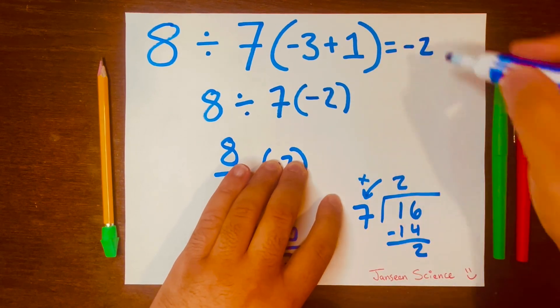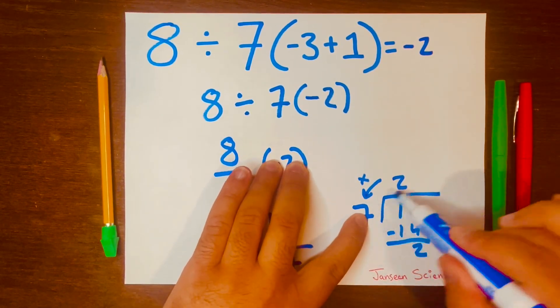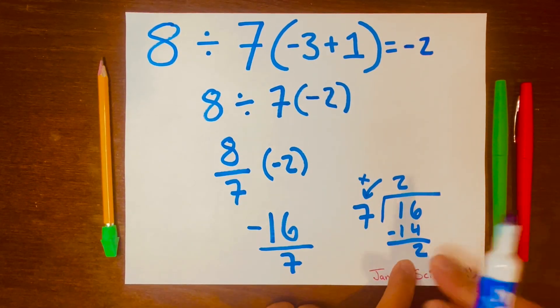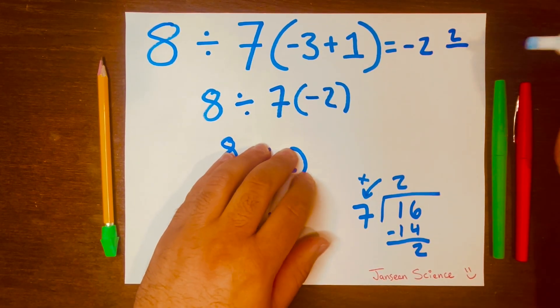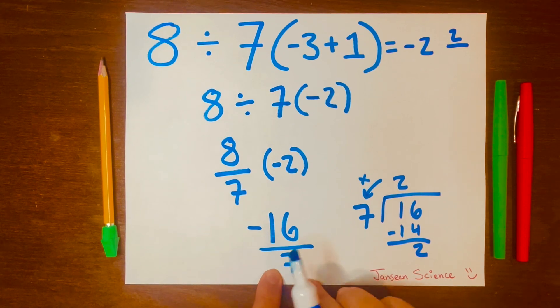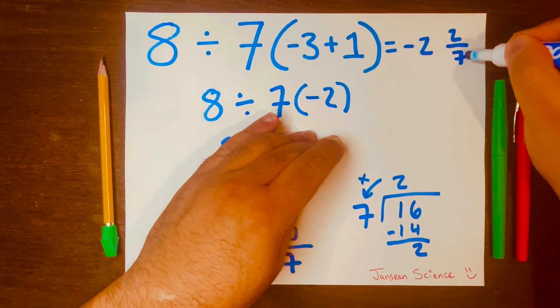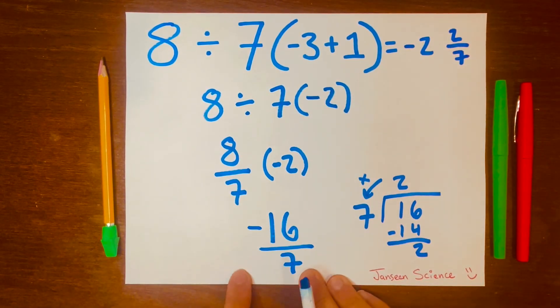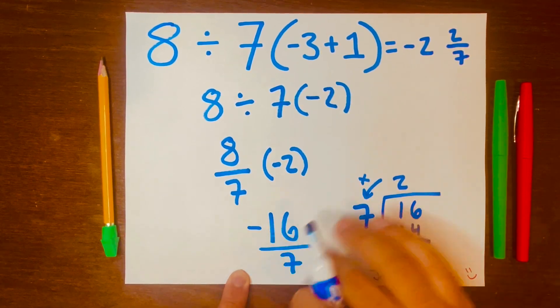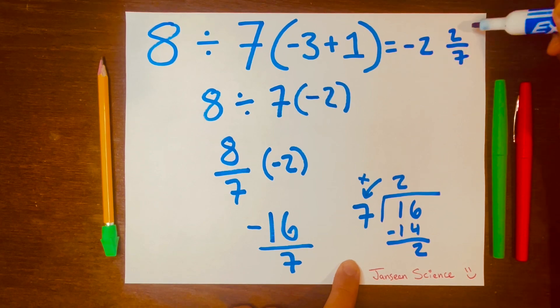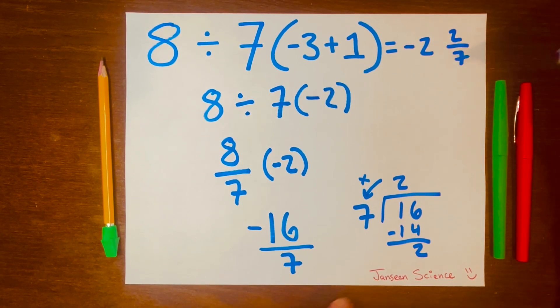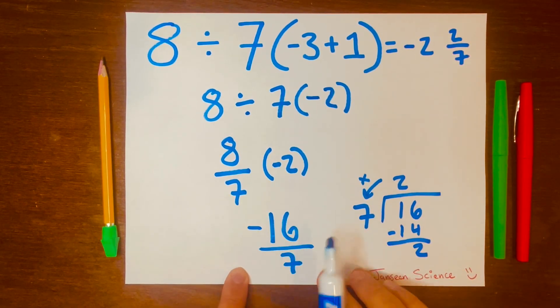So you can write your mixed number like this: negative 2. We get the 2 from the top of the long division symbol. The remainder will be the top part of the fraction, the proper fraction, and then we write the 7 from the denominator of this improper fraction answer. So your answer can be negative 2 and 2 over 7, or negative 16 over 7.